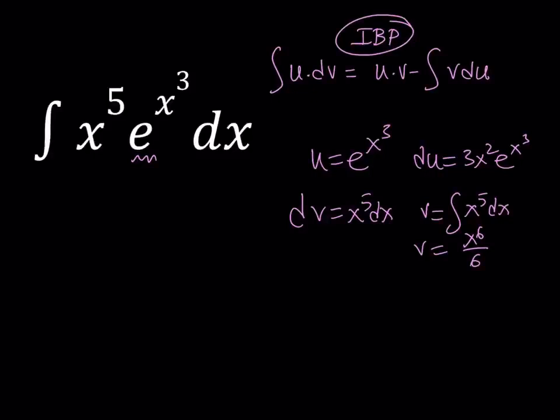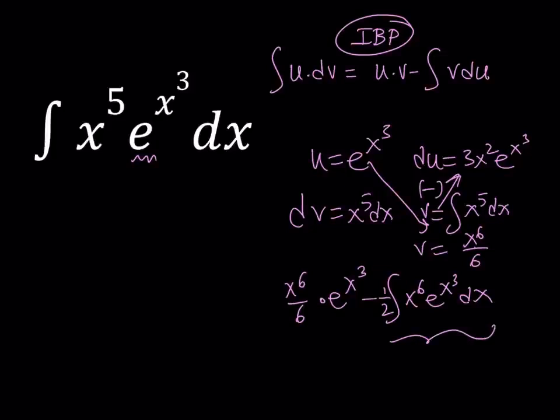So, it's going to look like this: x to the sixth over six times e to the power x cubed minus v du, which gives you 3x squared multiplied by this. So, it's going to be like one-half. We can pull the one-half outside. And then inside, we're going to be getting something like x to the sixth multiplied by e to the x cubed dx. Now, notice that this integral here is not simpler than what we started with. It's getting more and more complicated, which means that integration by parts is not a good idea.